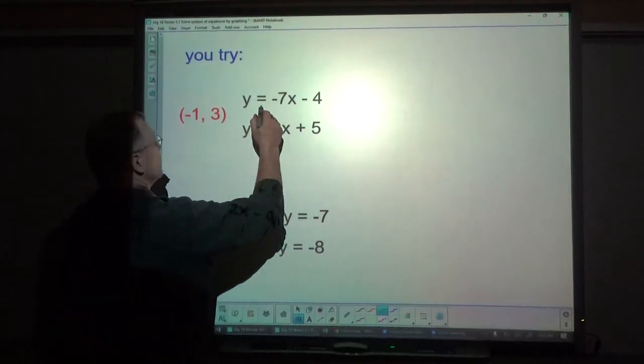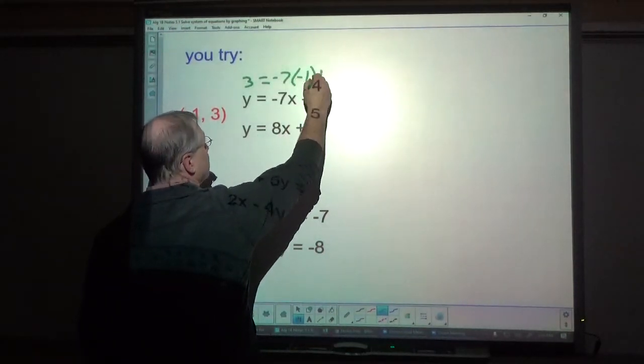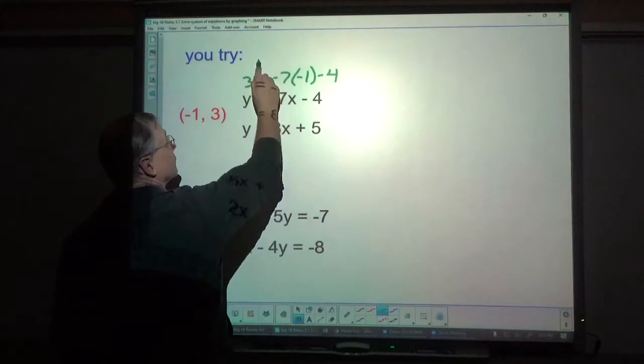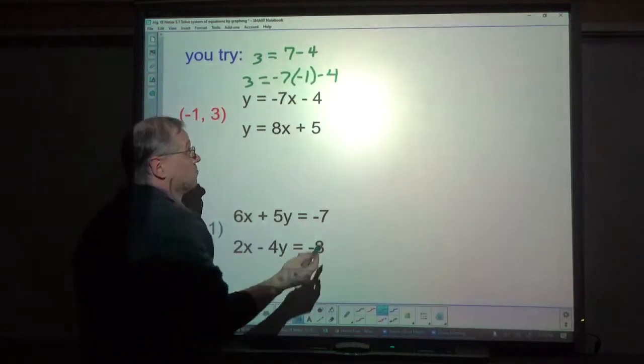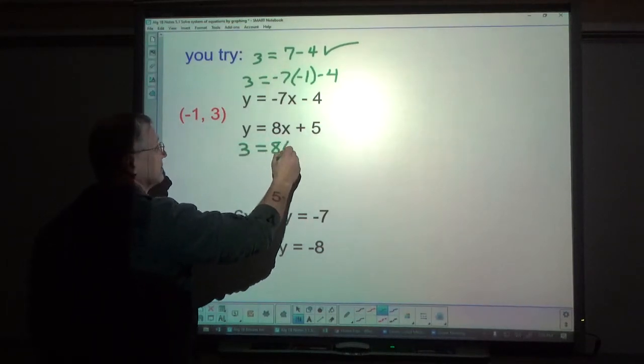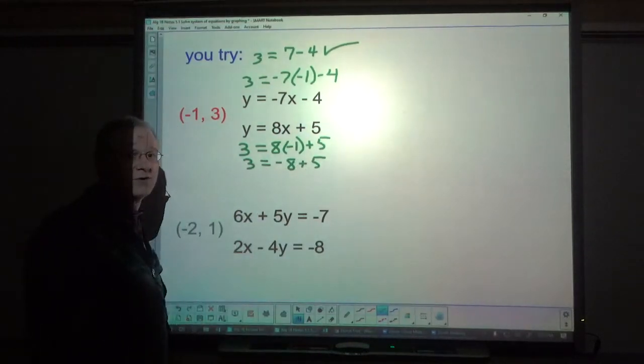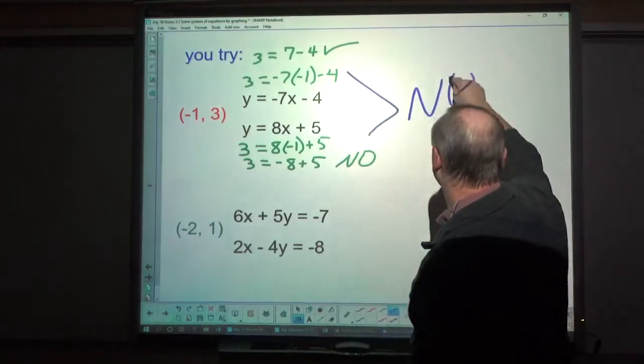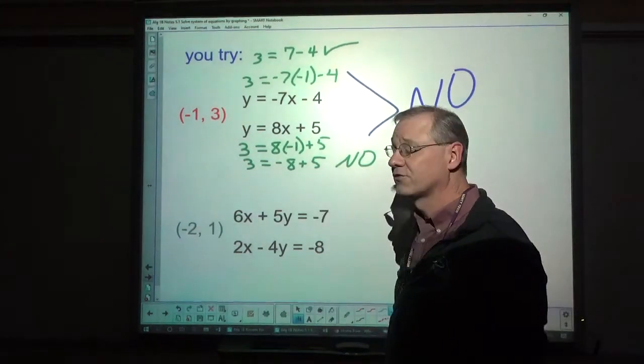Alright. So I'm going to plug this in. 3 for y has to equal negative 7 times negative 1 minus 4. So negative 7 times negative 1 is positive 7 minus 4. Does that equal 3? Yeah it does. Now we'll try this one. 3 has to equal 8 times negative 1 plus 5. 3 equal negative 8 plus 5. Does that work? Nope. So therefore the answer to this one is no, not a solution, because this one didn't work. It gave me negative 3, and 3 does not equal negative 3.